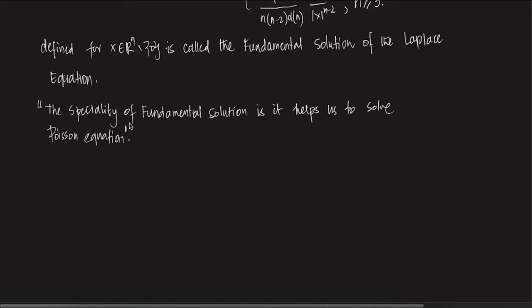So it's non-homogeneous. The fundamental solution essentially deals with the homogeneous problem — the Laplace equation. But what we are saying is we can use that particular function from the solution of the homogeneous problem in ℝⁿ minus {0} and use it to solve something which is like an inhomogeneous problem.